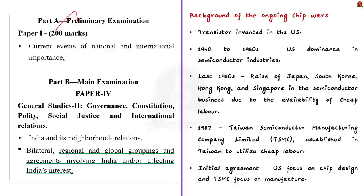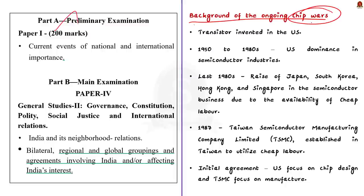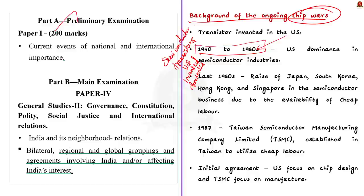The export control on gallium and germanium is the recent episode of the ongoing chip war between China and the West. It was the United States that started the chip war. To understand the context, we have to go back to the 1950s. In the early 1950s, the transistor — a major component in all semiconductor devices — was invented in the United States. For the next two decades, the US dominated the world in semiconductor manufacturing. In the late 1980s, the US started facing stiff competition from Japan, South Korea, Hong Kong, and Singapore.